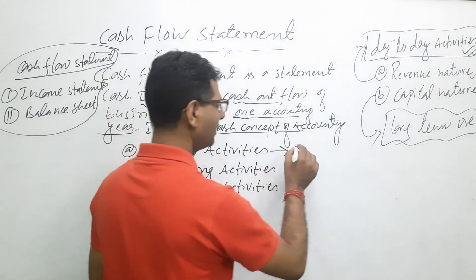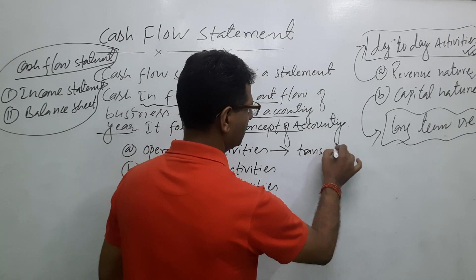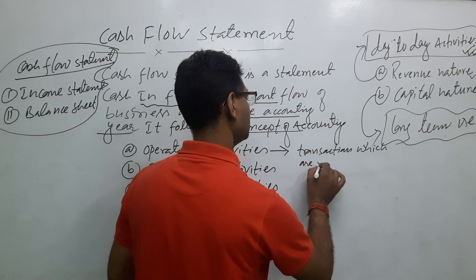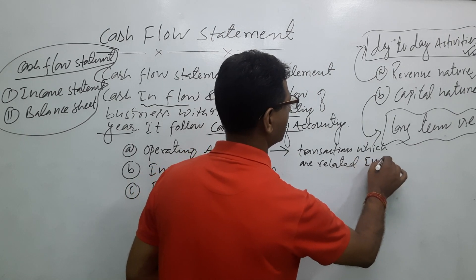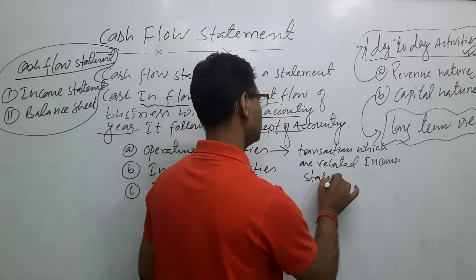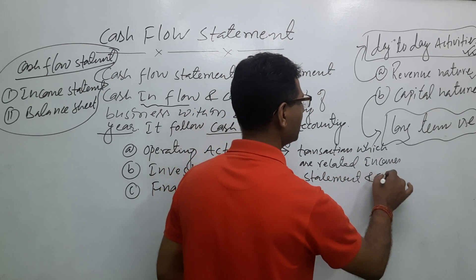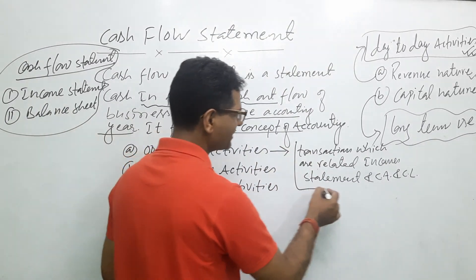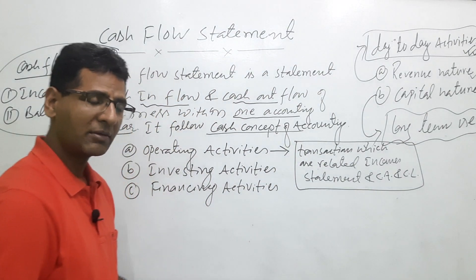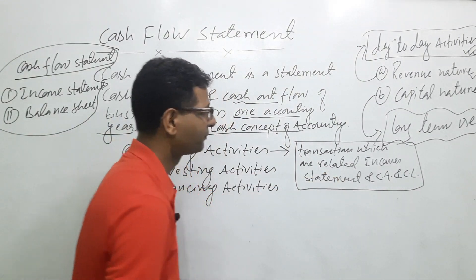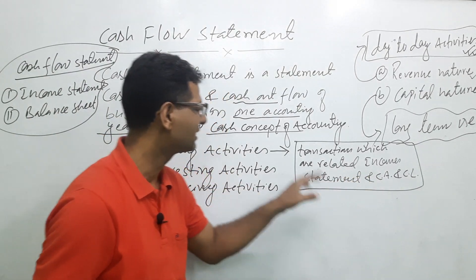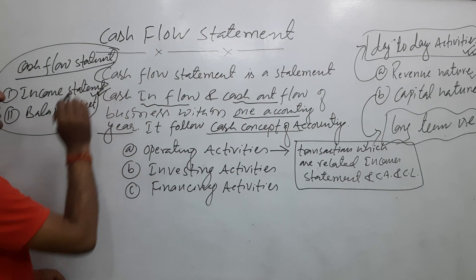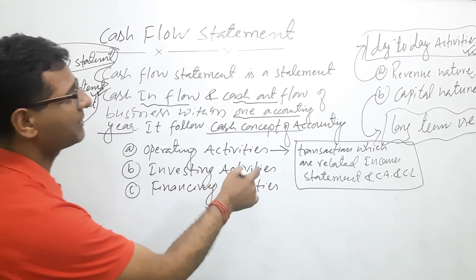Operating activities include transactions which are related to the income statement, and also current assets and current liabilities from the balance sheet. So transactions recorded in the income statement and those related to current assets and current liabilities fall under operating activities.